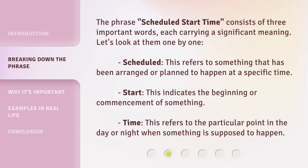The phrase 'Scheduled Start Time' consists of three important words, each carrying a significant meaning. Let's look at them one by one. Scheduled: this refers to something that has been arranged or planned to happen at a specific time. Start: this indicates the beginning or commencement of something. Time: this refers to the particular point in the day or night when something is supposed to happen.